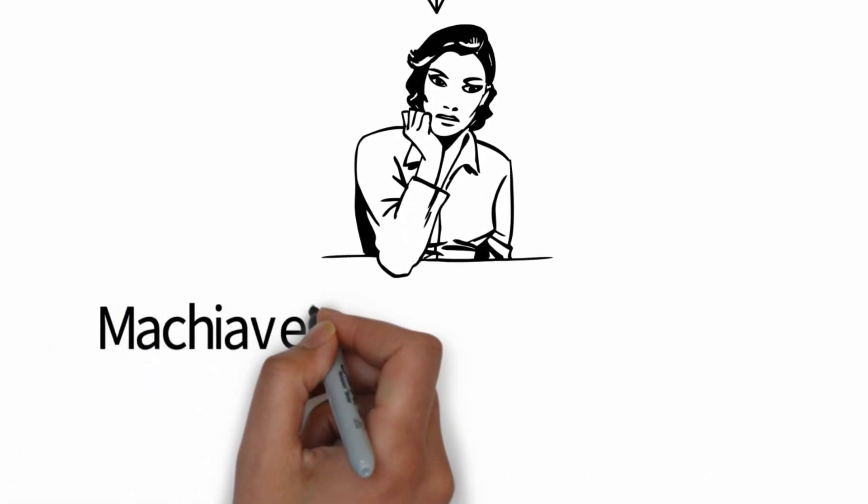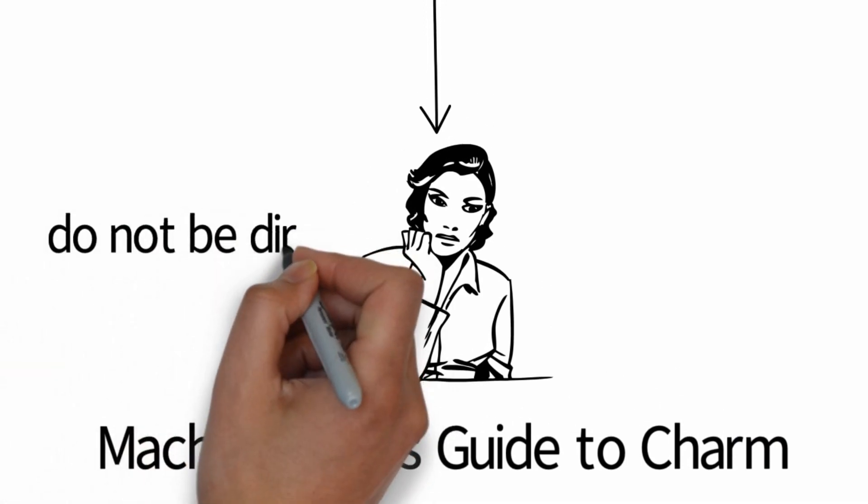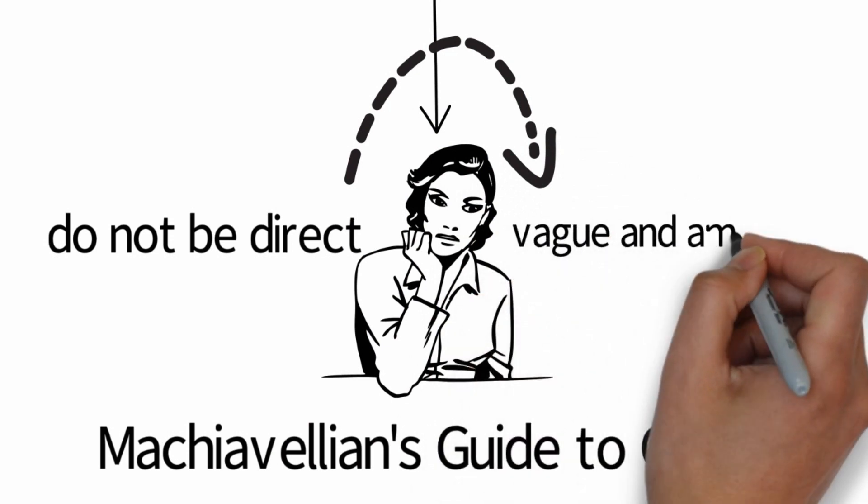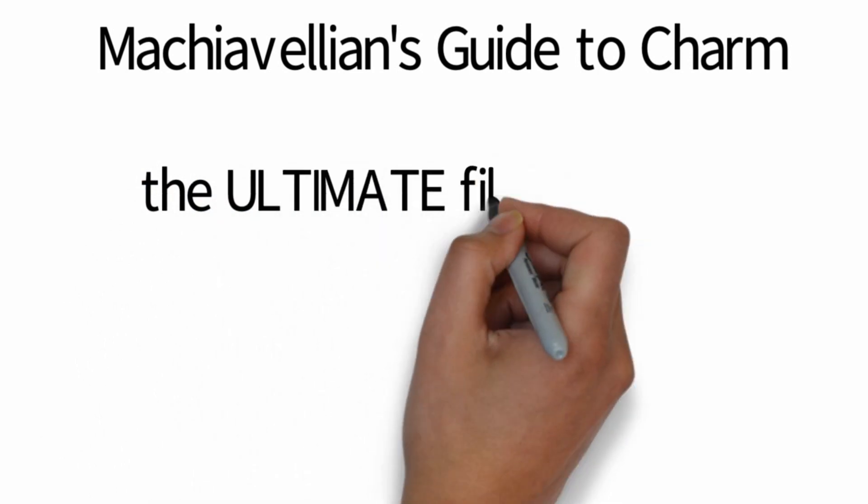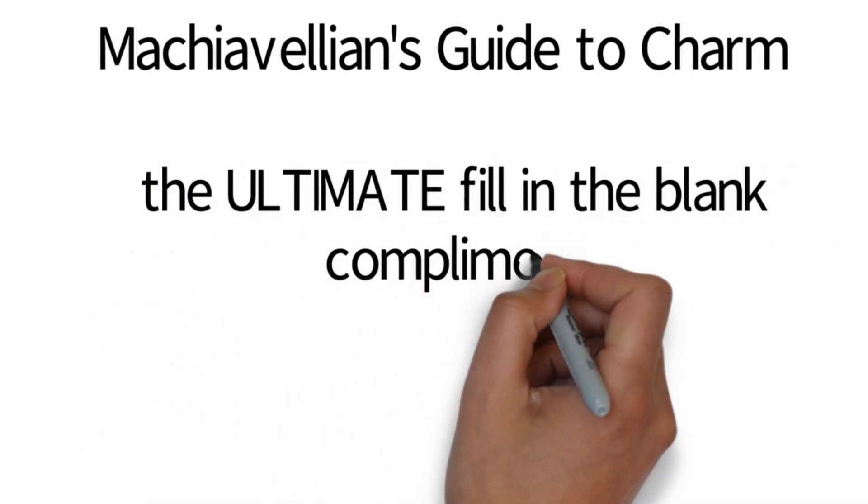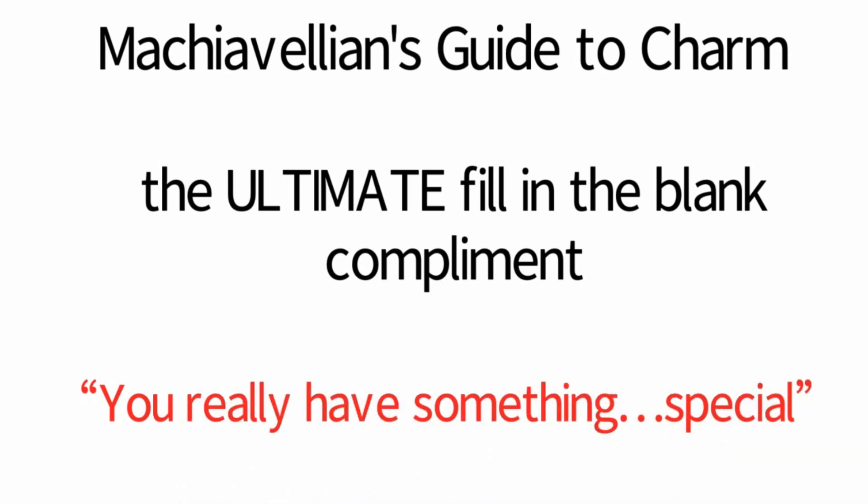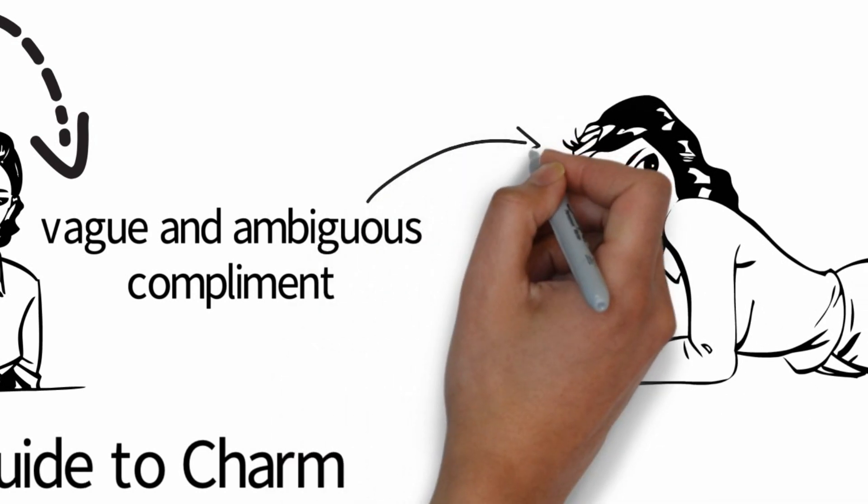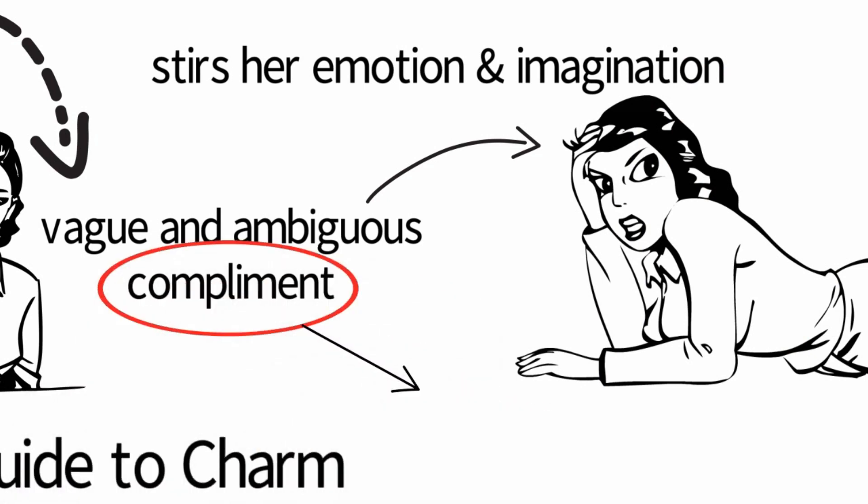This one's from the book The Machiavellian's Guide to Charm. When giving a girl a compliment, do not be direct. Instead, give her a vague and ambiguous compliment. This particular tip is called the ultimate fill-in-the-blank compliment. You can say to her, you really have something special. This one's a powerful compliment. The ambiguity will stir her emotion and imagination, and the compliment itself will feed her ego.